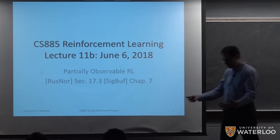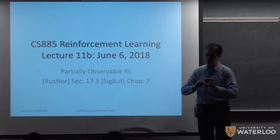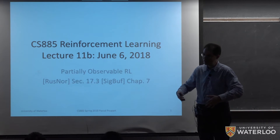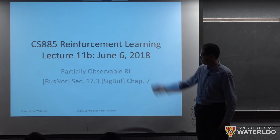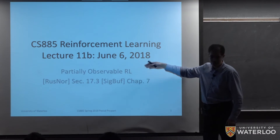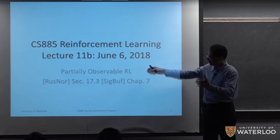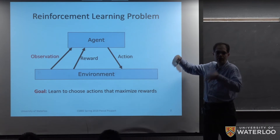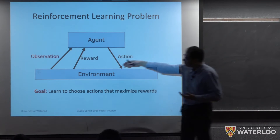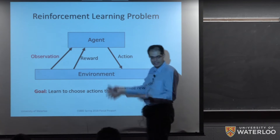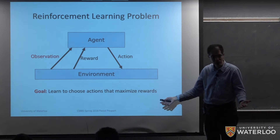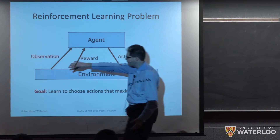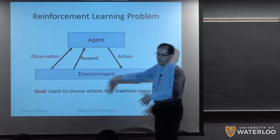Now that we've talked about partial observability, at least at the level of seeing how we can recognize states or estimate some distribution over the underlying states, let's use that in the context of reinforcement learning. For this set of slides, we're going to talk about partially observable reinforcement learning. The environment provides us with some observations, and those observations might be incomplete or noisy. We're going to develop algorithms that will work with this weaker type of signal.